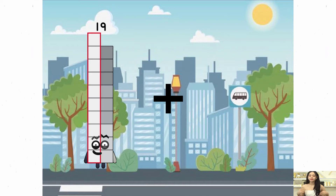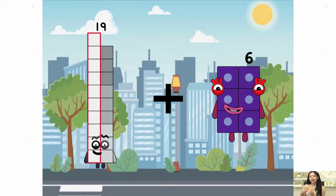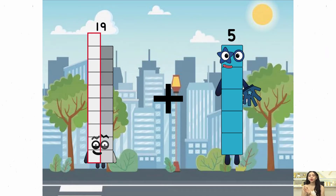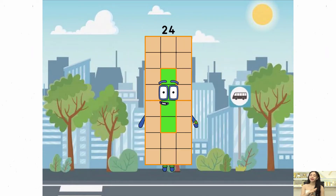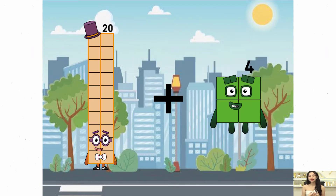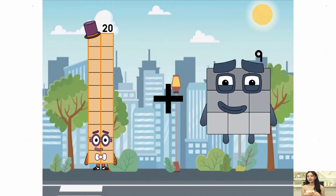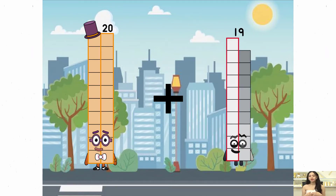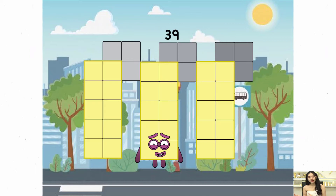19 plus 5 equals 24. 20 plus 19 equals 39.